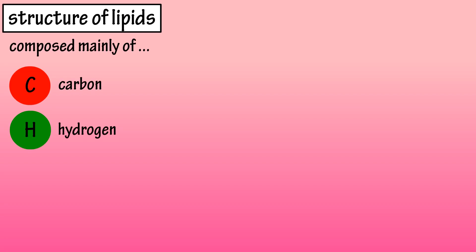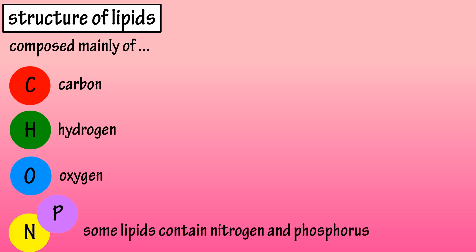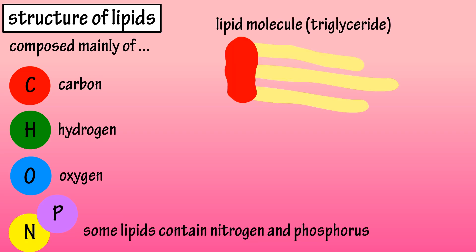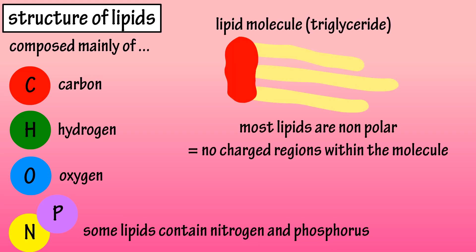The structure of lipids. Lipids, or fats, are composed mainly of carbon, hydrogen, and oxygen. Some lipids contain other elements such as nitrogen and phosphorus, and most lipids do not dissolve in water because they are non-polar, meaning that electrons are shared equally within the molecule, so they have no partially charged regions in the molecule.